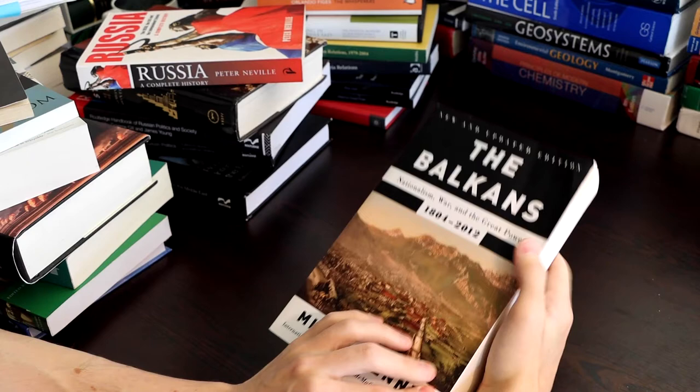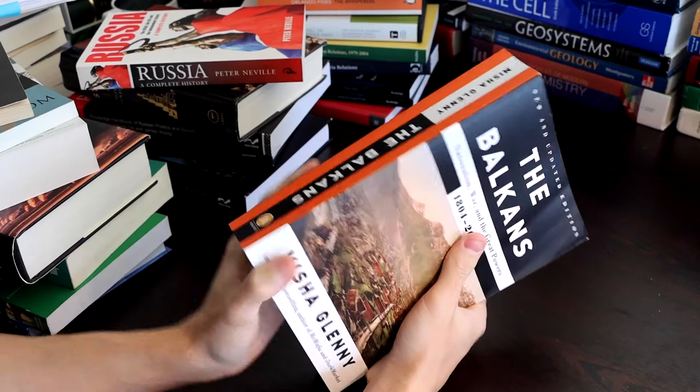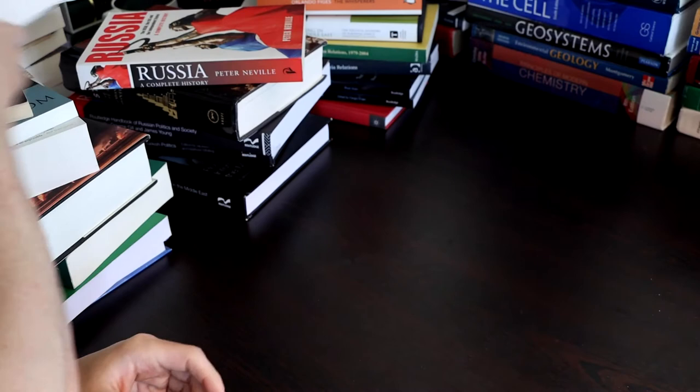The Balkans. 1804-2012. Nationalism, War and Great Powers. This is an extremely complex area. Hence why the book is so big. I actually spent a lot of time looking for a systematic book on the Balkans. And then, once I go through it, maybe I'll study each country individually.